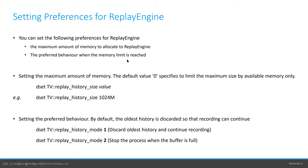You can set preferences for Replay Engine. In the new user interface you can set the maximum amount of memory available using the dset command. By default, Replay Engine discards the oldest history — keeping a rolling buffer — and you can change that. Mode one discards the oldest history; mode two stops the process when the buffer is full.